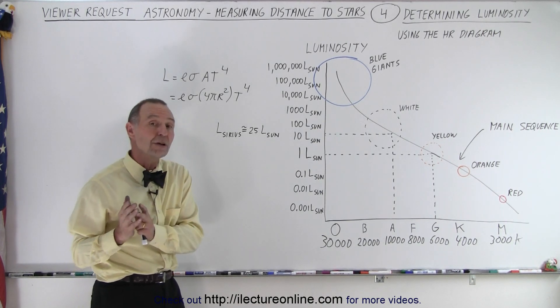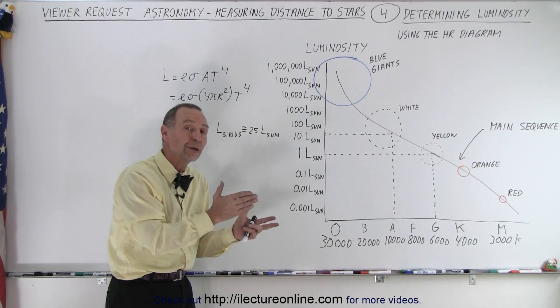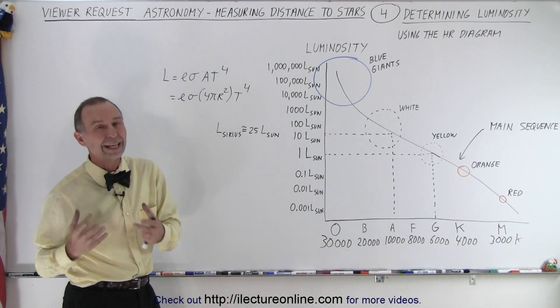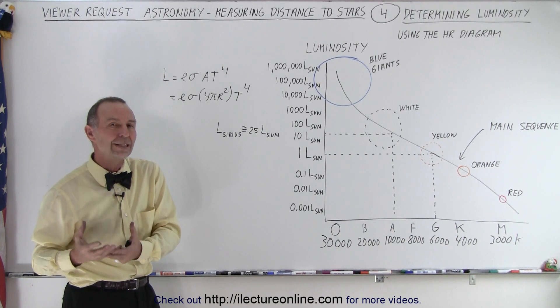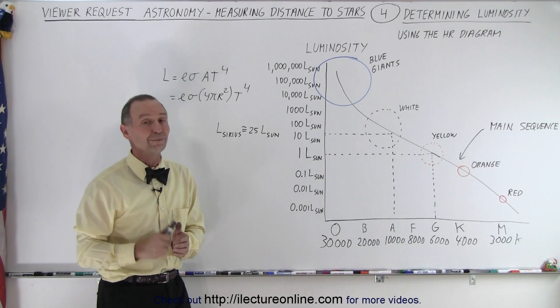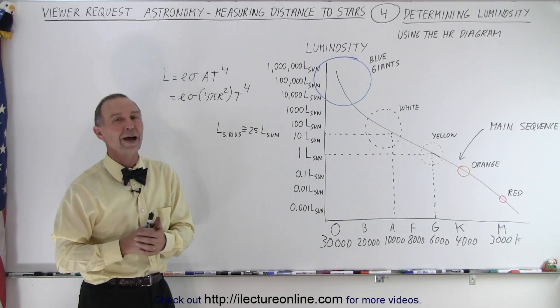And obviously once we measure the apparent magnitude and we compare it to the absolute magnitude we should be able to calculate the distance. So next how do we calculate the absolute magnitude of a star once we know the luminosity? So stay tuned and we'll show you how to do that.